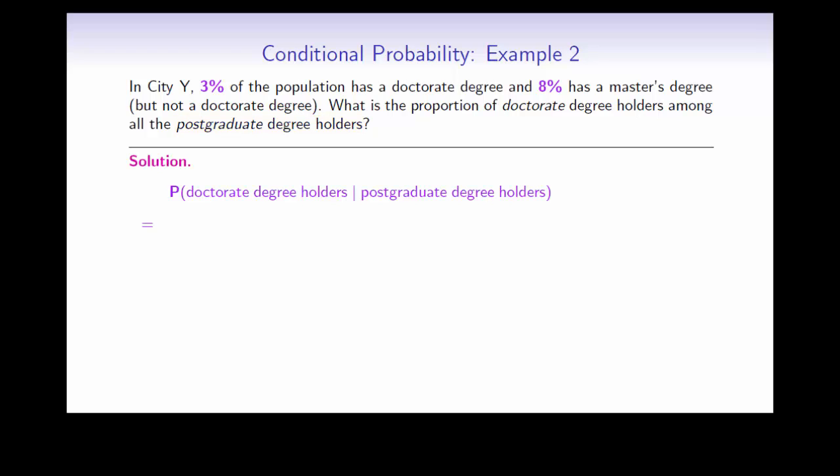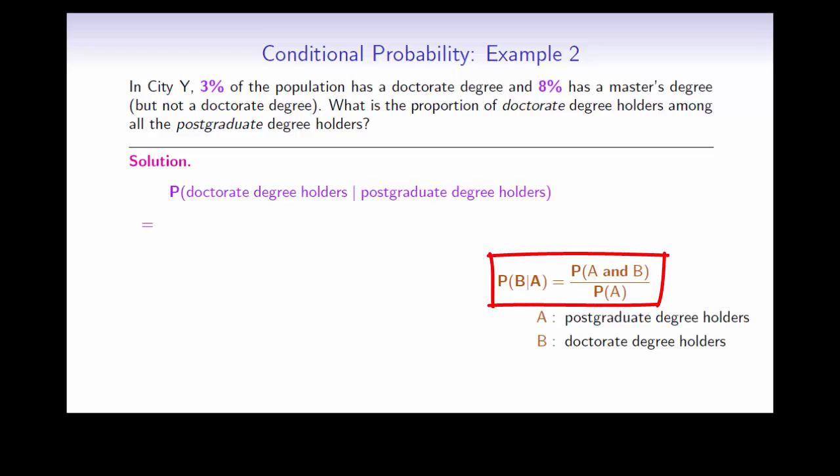This means we should find the probability that a person has a doctorate degree given that they have some form of postgraduate degree. So we need to use the conditional probability formula. In this case, A and B is actually the same as just B, because if a person has a doctorate degree, that means they automatically have some form of postgraduate degree.